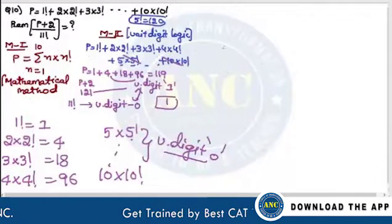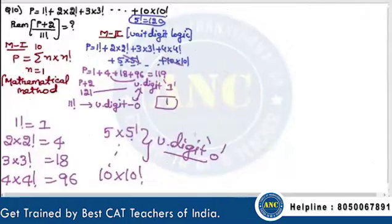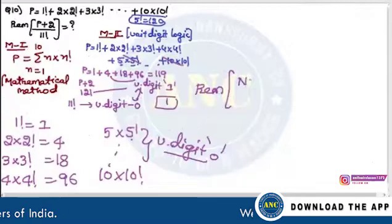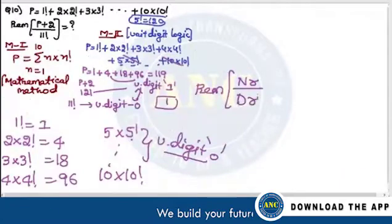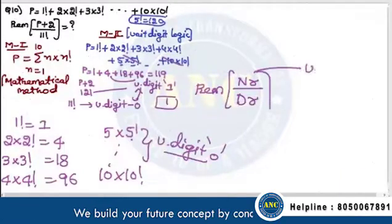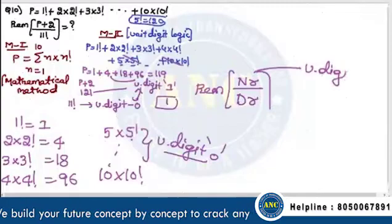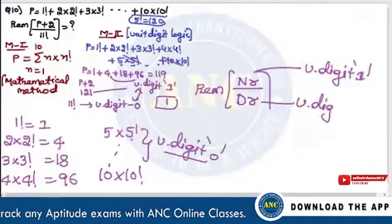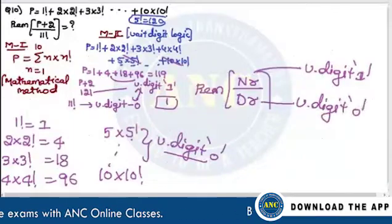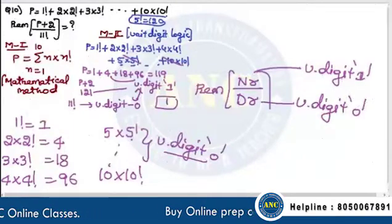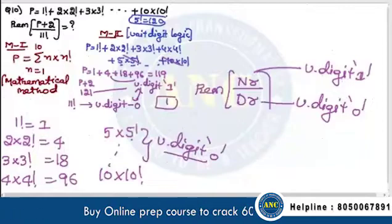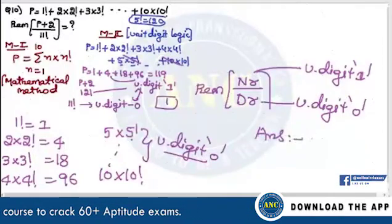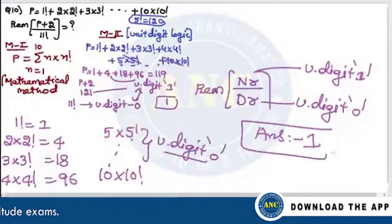Method 2 takes very very less time. The remainder when numerator unit digit is 1 and denominator unit digit is 0 — based on the answer options, write unit digit 1 divided by unit digit 0. The possibility is 1.